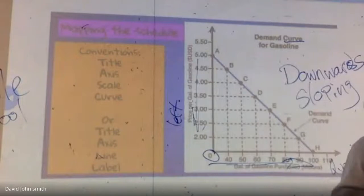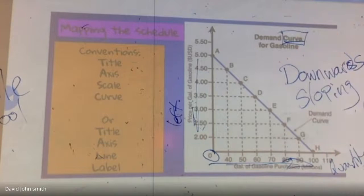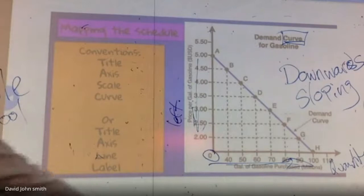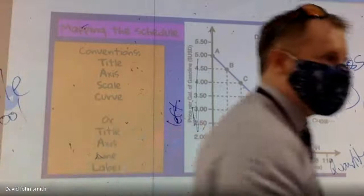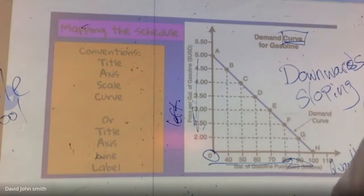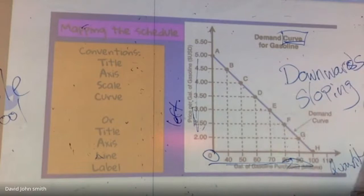I usually get asked a particular question around about this time: why do we call it a curve when it's quite clearly not? There's a very good reason — what we are doing is approximating reality, trying to make it as simple for our analysis as possible. So the demand curve here is illustrated as a straight line, whereas the real demand curve we see in real life is much more likely to be an actual curve.